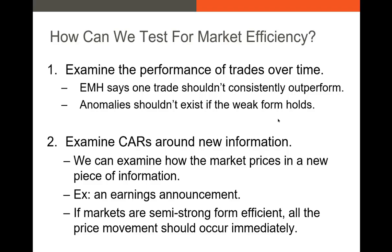In other words, anomalous variables shouldn't exist if the weak form of market efficiency holds. We can't just buy up stocks that did really well in the past and earn a positive abnormal return — that shouldn't be true if the weak form holds. To test whether the semi-strong form holds, we can look at cumulative abnormal returns, or CARs, around the release of new information to the public. CARs are the investor response around some big event like an earnings surprise. If markets are semi-strong form efficient, the price movement should be instantaneous around that new information being released.